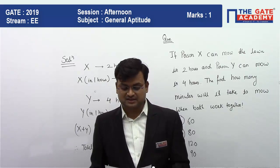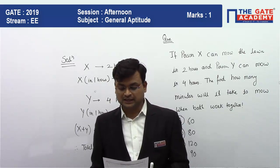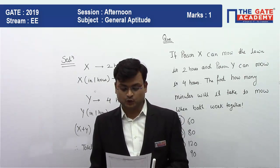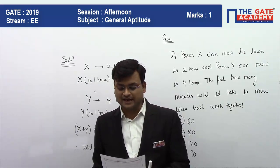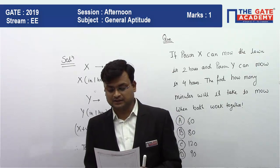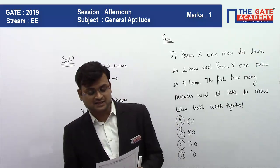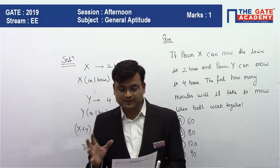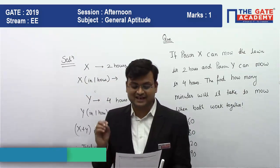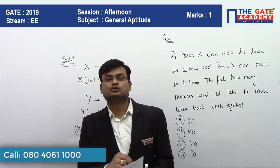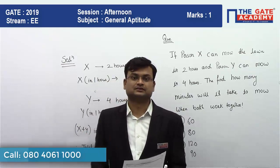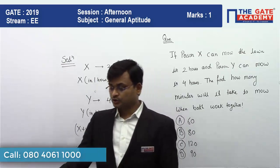The question is: if person X can alone mow the lawn in two hours, and person Y can mow the lawn in four hours, then find how many minutes it will take if they are doing the work together.